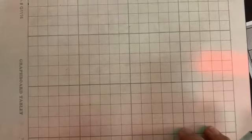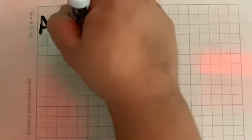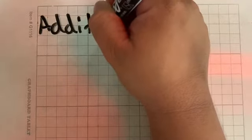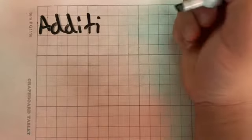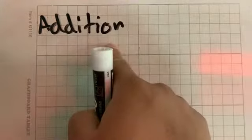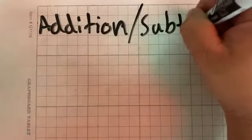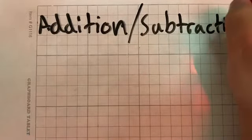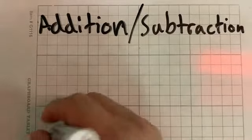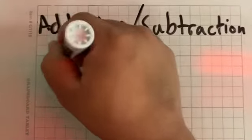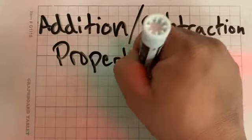We also have a couple properties. So we've already talked about the distributive property. Now we're going to talk about, I'm making sure I spell right because my spelling is horrible. I teach math, not English. Right? Addition. We're going to go ahead and talk about both of these. Addition and subtraction.